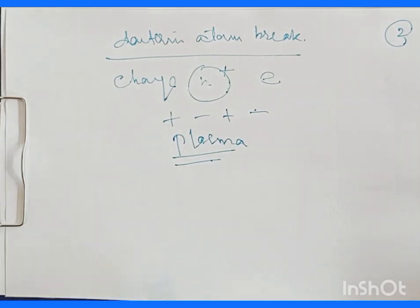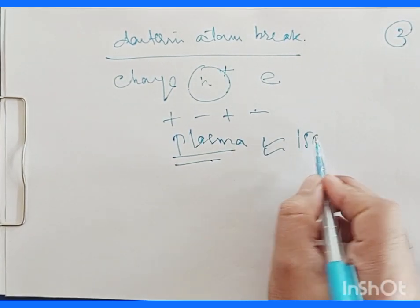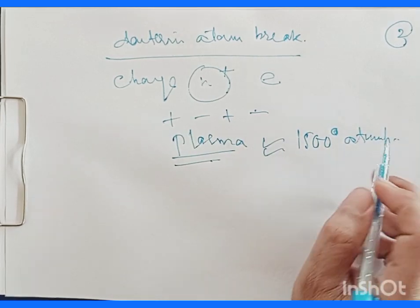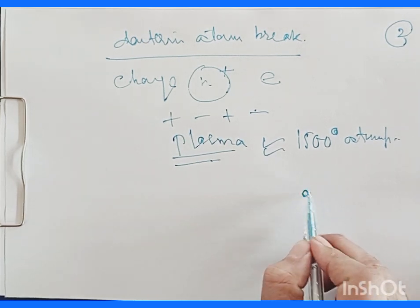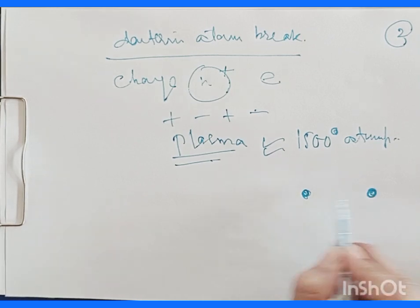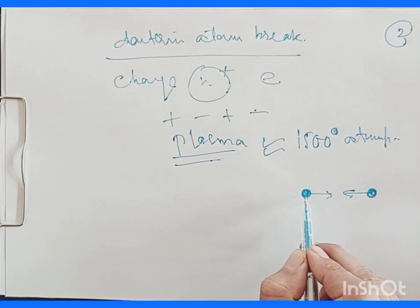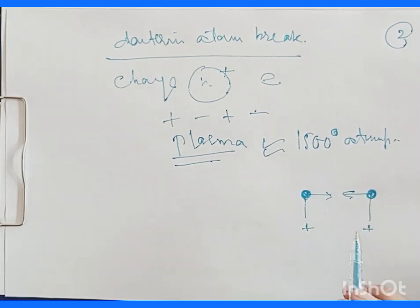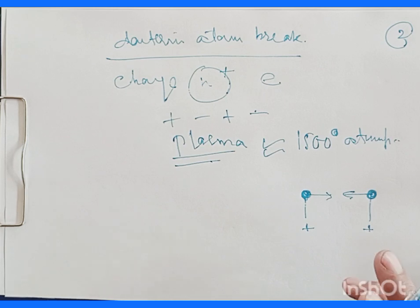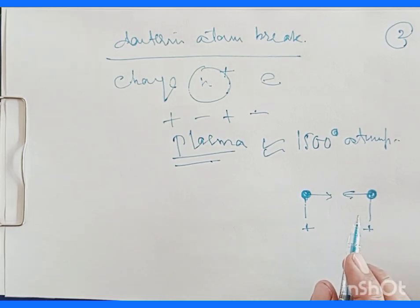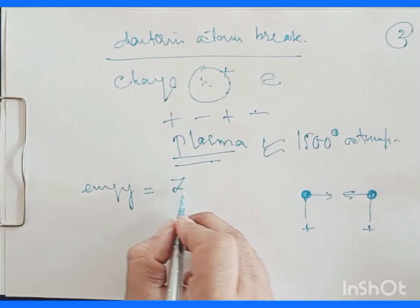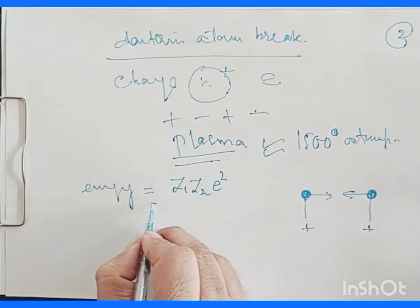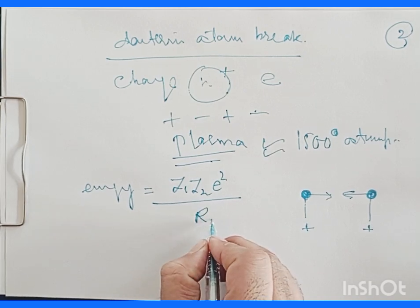The pressure has risen at this stage to 1,500 atmospheres. Now the energy which must be supplied to overcome the Coulomb repulsion is important, because of the positive charges of the two interacting nuclei. That energy can be expressed as Z₁Z₂e²/r₀.